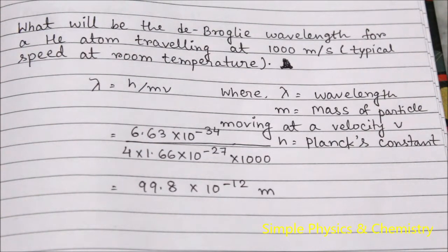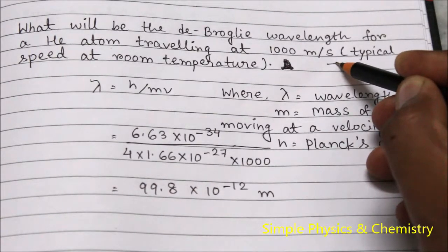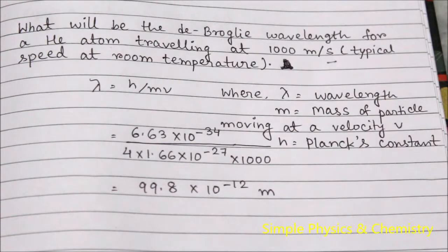What will be the De Broglie wavelength for a helium atom traveling at a speed of 1000 meters per second? This is a typical speed at room temperature.